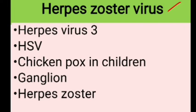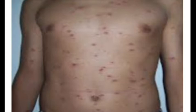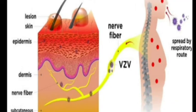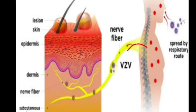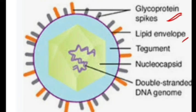The herpes zoster virus can also be called herpes virus 3. Morphologically it is similar to the herpes simplex virus but differs antigenically and clinically. It usually causes chickenpox in children which later leads to shingles or herpes zoster. After the initial attack of chickenpox, the virus travels in a retrograde manner to the dorsal root and cranial nerve sensory ganglion where it remains dormant for many years, then gets reactivated when the person's immunity decreases.